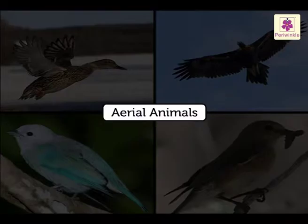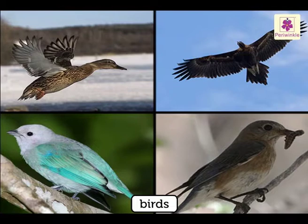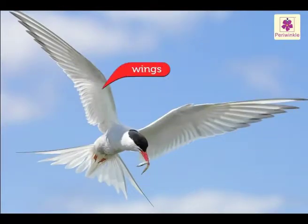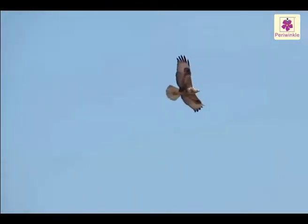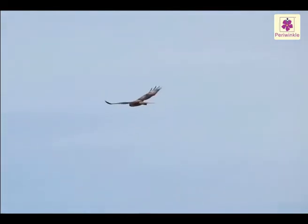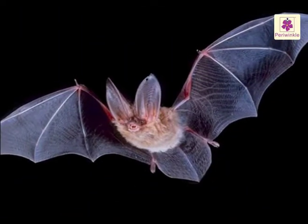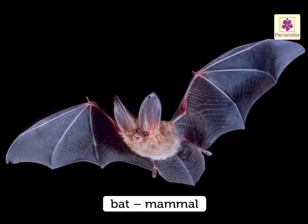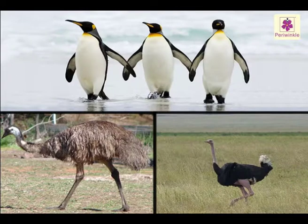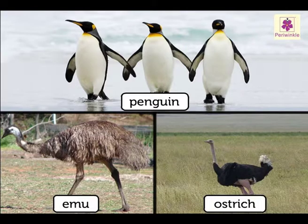Birds are aerial animals. They have wings to fly. They have light, hollow bones which keep their body weight down. They do not spend their whole life in the air, but as they are mostly airborne, they are called aerial animals. All aerial animals are not birds — the bat is not a bird, it is a mammal, but it can fly. All birds cannot be called aerial animals; penguin, emu and ostrich cannot fly.